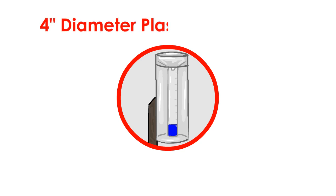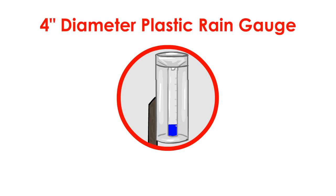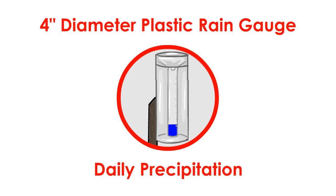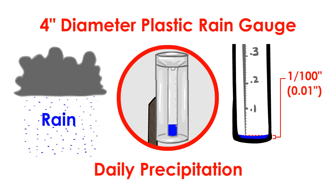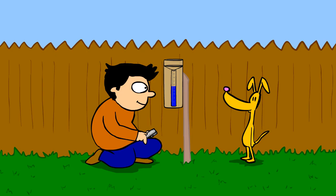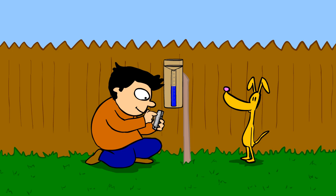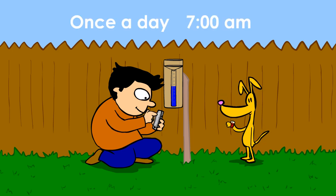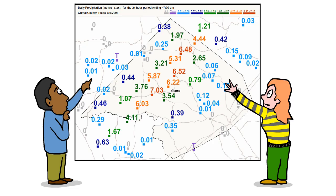This 4-inch diameter plastic rain gauge is used to measure daily precipitation, most notably rain, and is accurate to the nearest 1/100th of an inch. In the water cycle, precipitation is a huge part of how water gets from the sky down to the ground. Each measurement, typically taken once a day usually around 7 a.m., helps meteorologists better understand how variable precipitation can be.